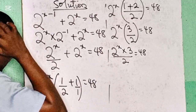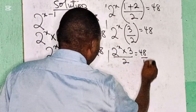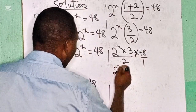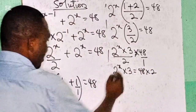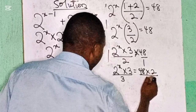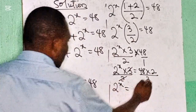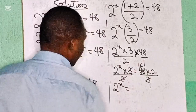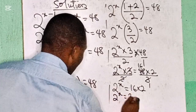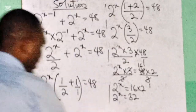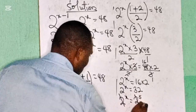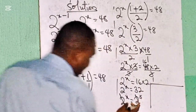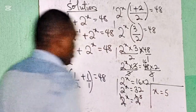This can be written as 2 to the power of x times 3 over 2 equals 48. So cross-multiplying, 2 to the power of x times 3 equals 48 times 2. Dividing both sides by 3, 3 cancels 3. So 2 raised to the power of x equals 48 divided by 3, which is 16, times 2, giving us 32. At the end of the day, 2 to the power of x equals 2 raised to the power of 5. So x equals 5.